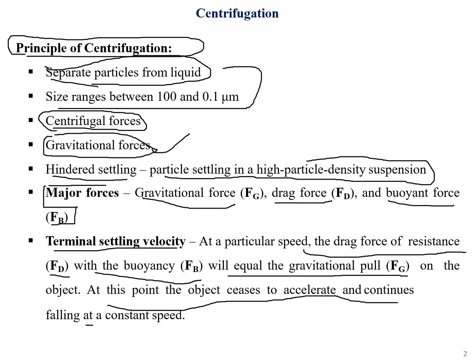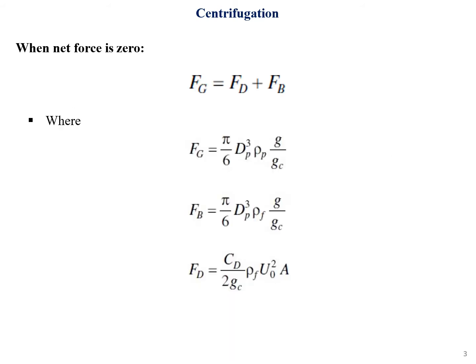At terminal settling velocity, the object ceases to accelerate and continues falling at constant speed. At this point, fg equals fb plus fd. This constant rotational condition allows the particles to be separated from each other depending on their sizes.